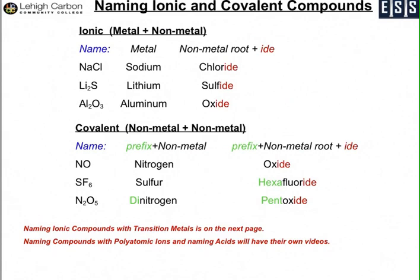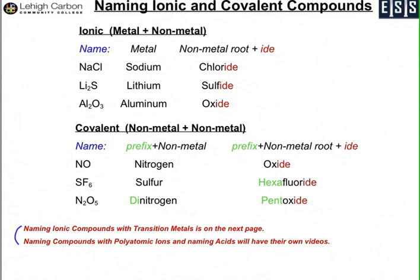This video reviews the basic naming conventions that we use for ionic and covalent compounds in chemistry. I'll let you know that I will review how to deal with transition metals and ionic compounds on the next slide in this video, and for polyatomic ions and acids I'll have a separate video that you can look up and use.